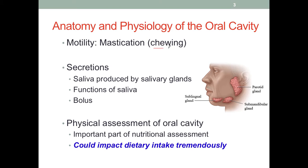One of the functions of the oral cavity is chewing — that is motility. Chewing is essential for the mechanical digestion of food. Damage to the muscles or nerves that control movement of the tongue or other structures in the mouth cavity could affect this process, as could damage to the teeth or jaw.